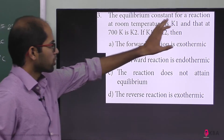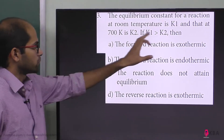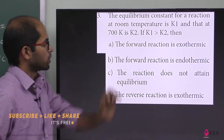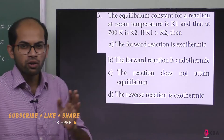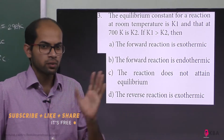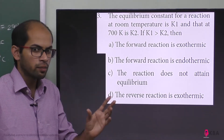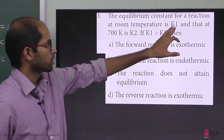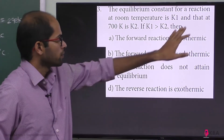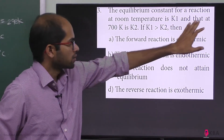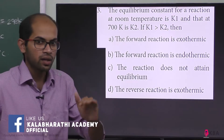The equilibrium constant for a reaction at room temperature is K1. Room temperature is 25 degrees Celsius, which equals 298 Kelvin. The equilibrium constant at 700 Kelvin is K2.